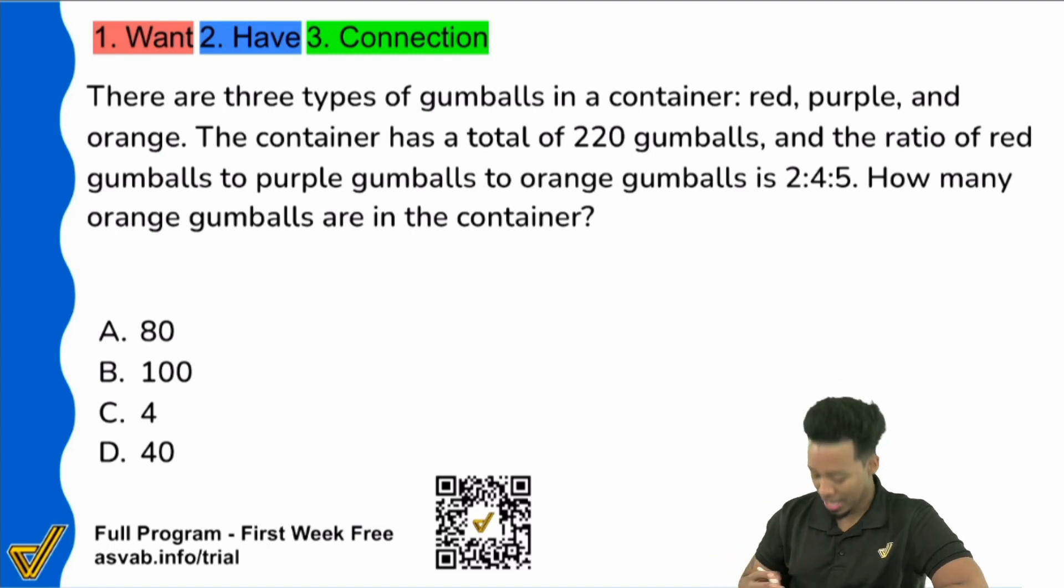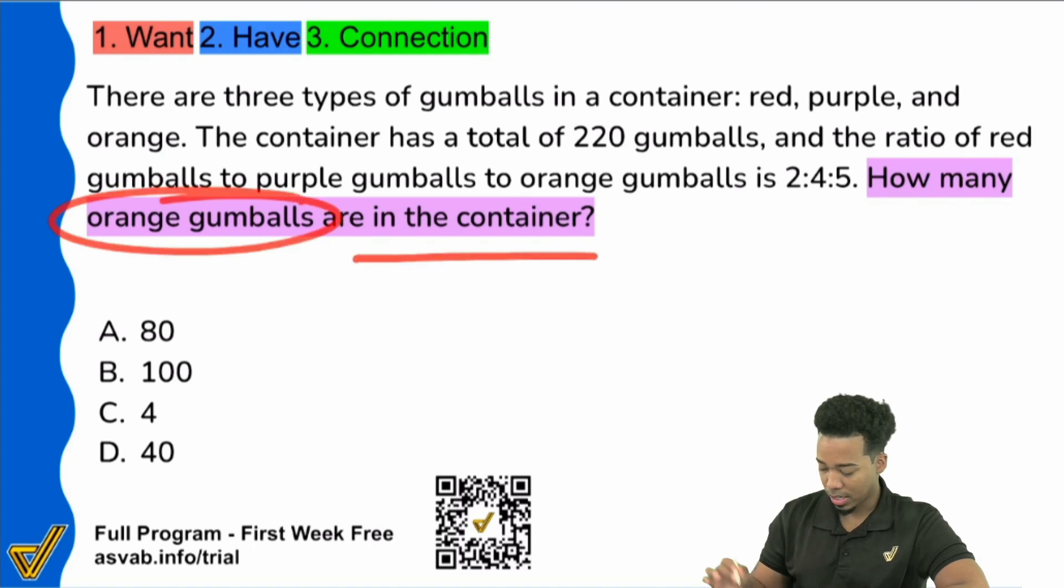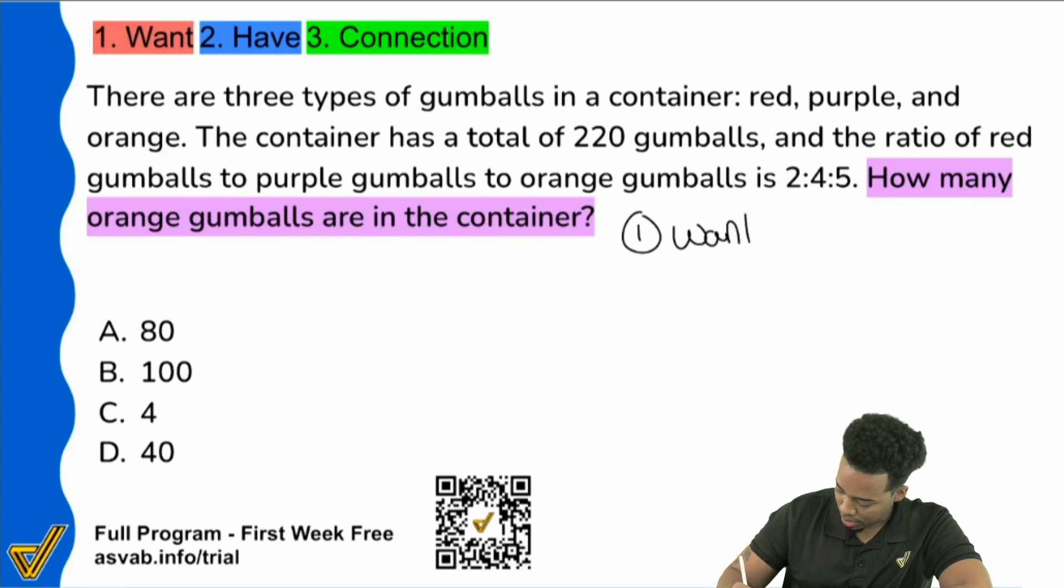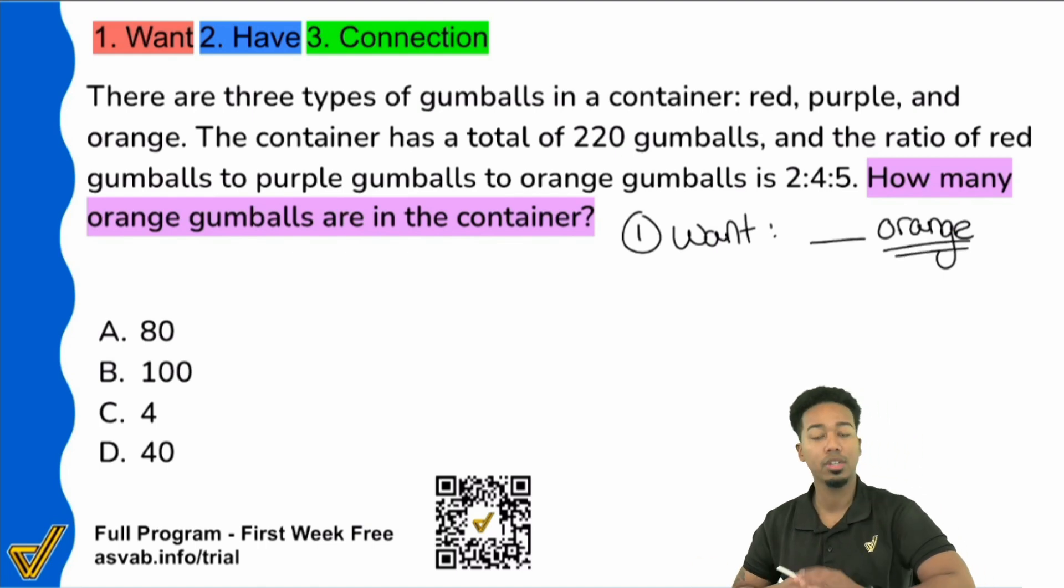Here we go. So the question is the first thing we should look at, the question sentence. Always do that. And it says, how many orange gumballs are in the container? Okay, sounds good. We want to know how many orange gumballs. So just write that down. What do we want? We want blank orange gumballs. Orange is what we're looking for.